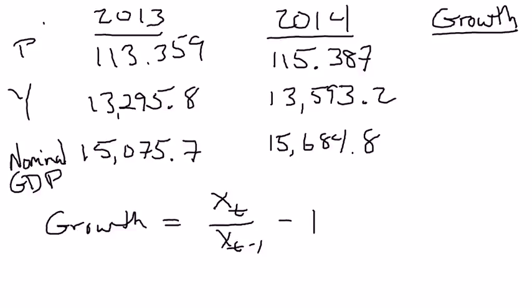We've got real GDP, which is Y, meaning about $13,295.8 billion worth of stuff was produced in 2013, and that rose to about $13,593.2 billion worth of stuff.